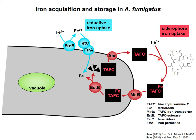The binding constant for iron is around 10 to the power of 30. Iron-siderophore complexes are then taken up by specific transporters. Within the cells, TAF-C is hydrolyzed to liberate the iron. Most fungal species produce siderophores, but there are famous exceptions like baker's yeast, Candida albicans, Cryptococcus neoformans — interestingly, all yeast species. Despite the fact that these species are not able to produce siderophores, they are able to utilize siderophores produced by other fungi or bacteria.